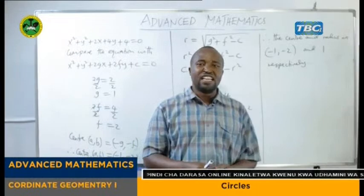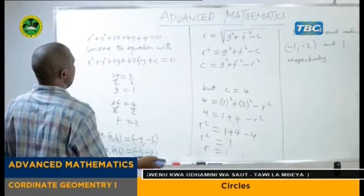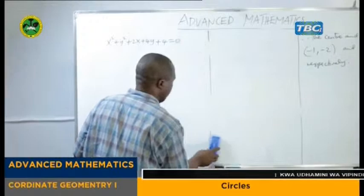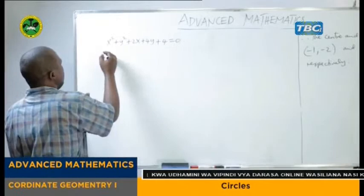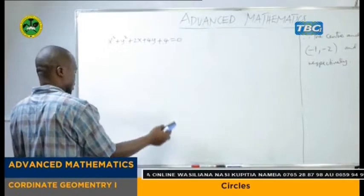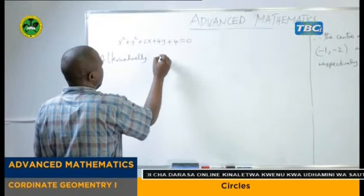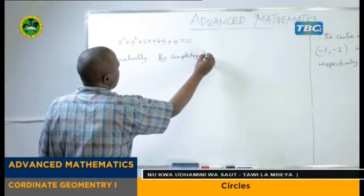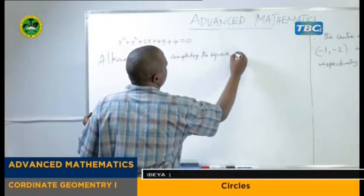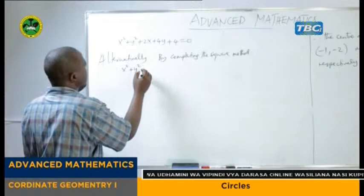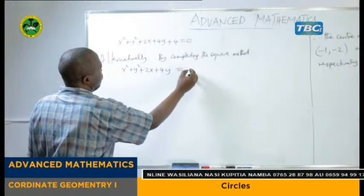But again my dear students, it is possible to use another alternative way. So here let us have an alternative way of finding the center and the radius of that equation. That is by completing the square. So alternatively, that is by the completing the square method.